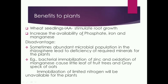There are some disadvantages too. Sometimes the abundant microbial population in the rhizosphere leads to deficiency of required minerals for the plants. For example, bacterial immobilization of zinc and oxidation of manganese can cause little leaf of fruit trees and gray speck of oats. Sometimes nitrogen gets limited due to immobilization, making it unavailable for the plants.